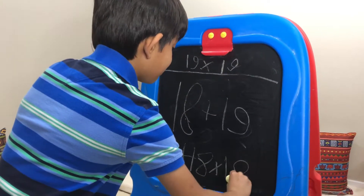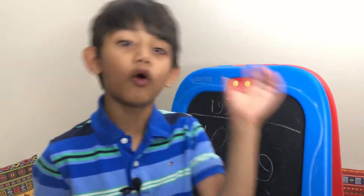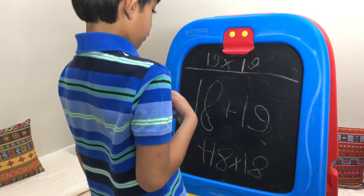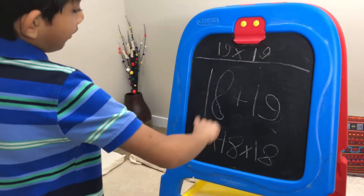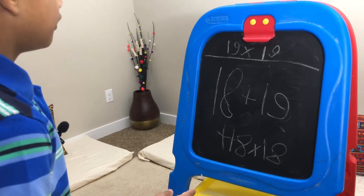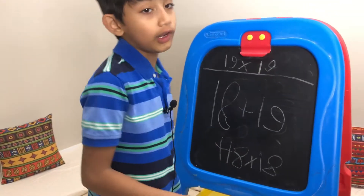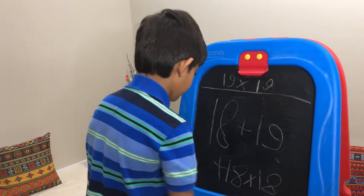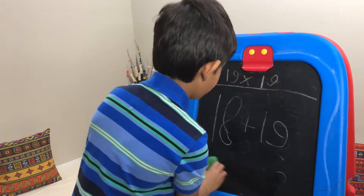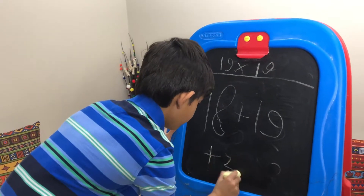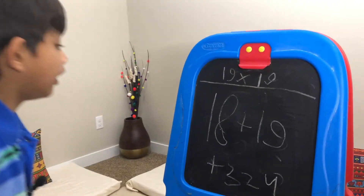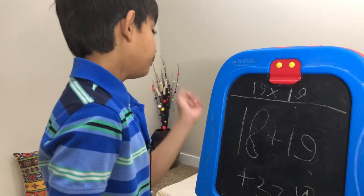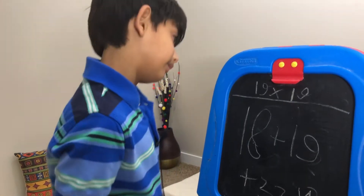If you don't know 18 squared, use the same trick over and over again until you get to a number you know. So it's 18 plus 19 plus 18 squared. What's 18 squared? It's 324. So 18 squared is basically 324, and 324 is 18 squared.